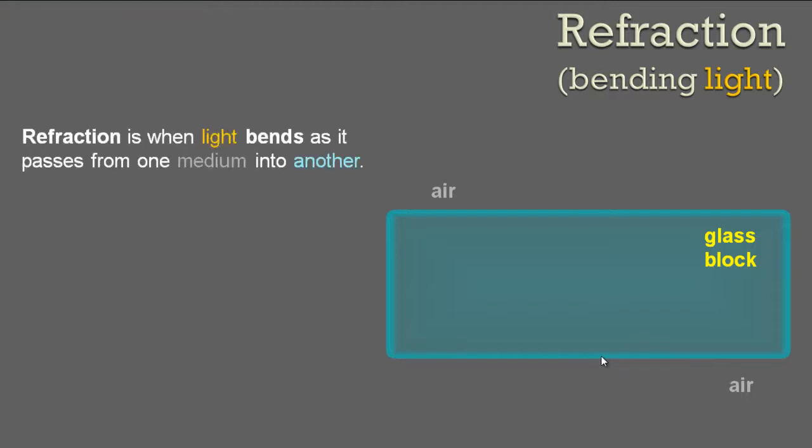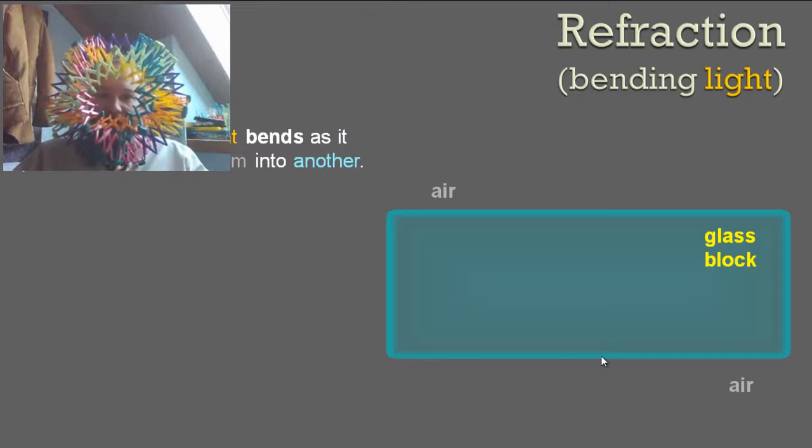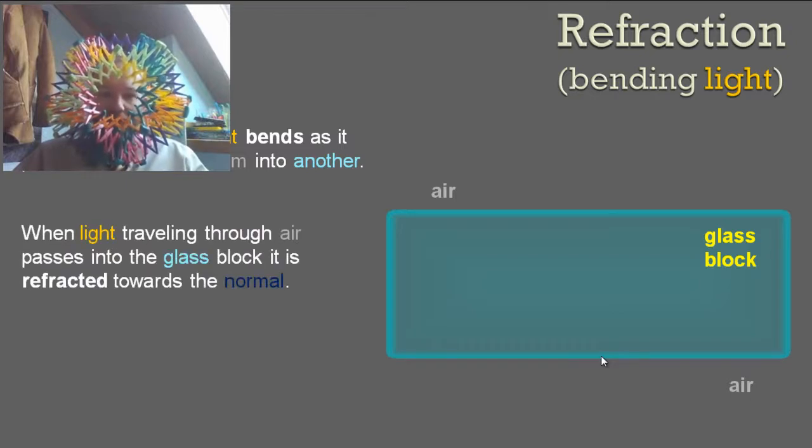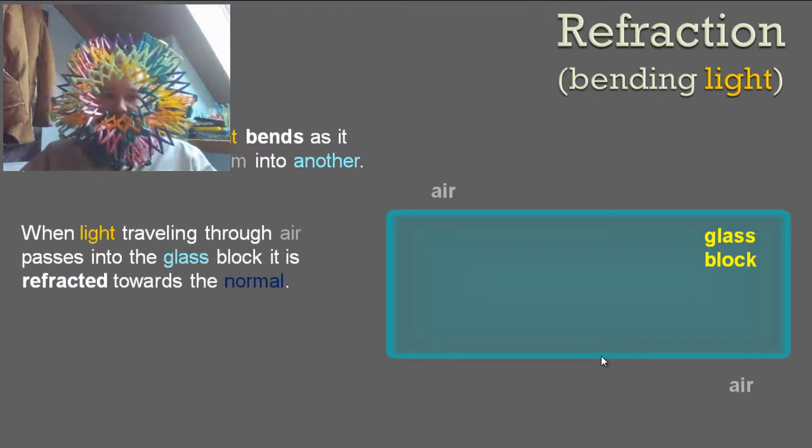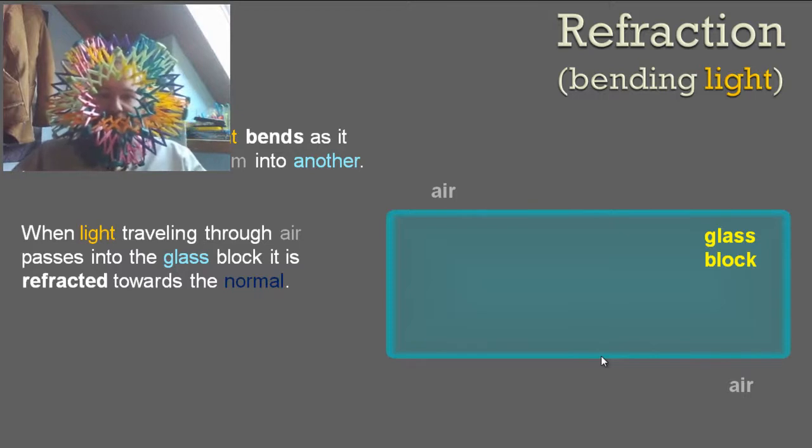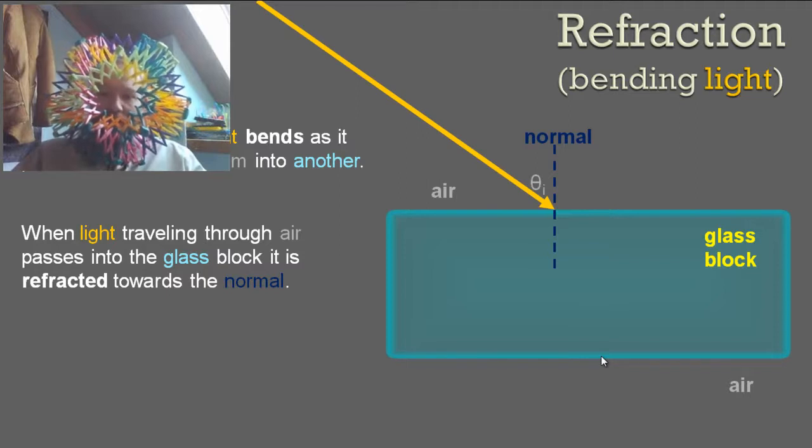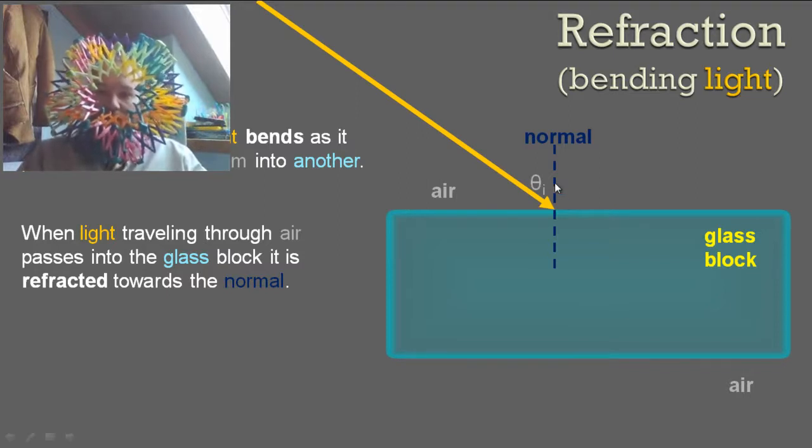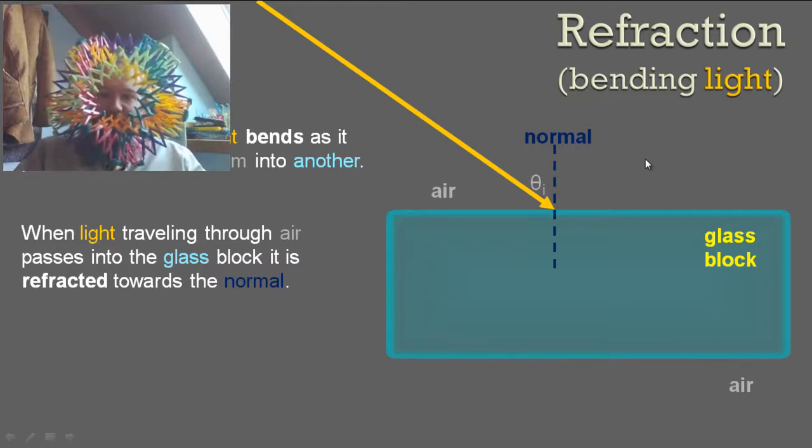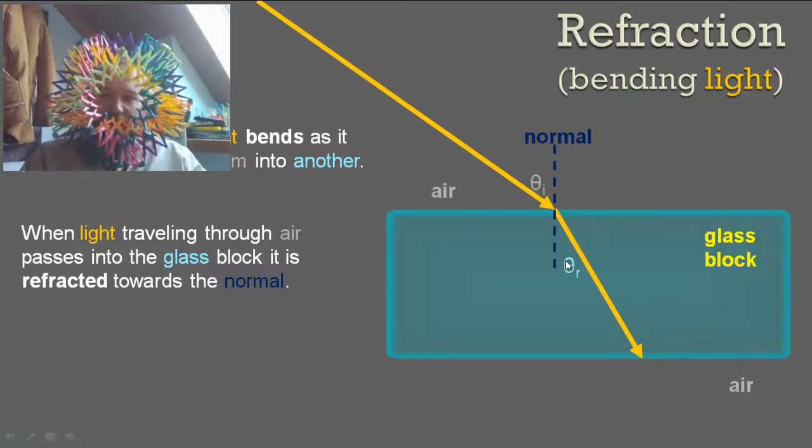Light works the same way. Refraction is when light bends as it passes from one medium into another. When light traveling through air passes into the glass block, it is refracted towards the normal line. Here comes the light, it hits the block. Here's the normal line. We always measure the incident angle from the normal, so here's your incident angle. Now it's going to bend towards the normal, and this angle is going to be smaller, the refracted angle here.